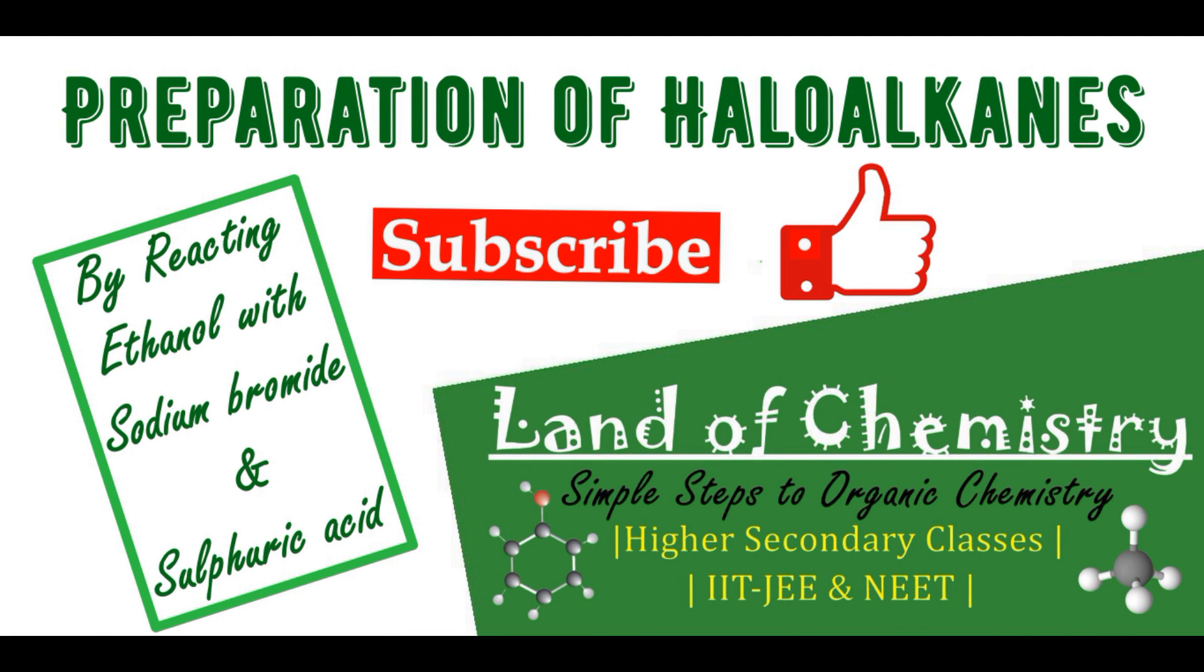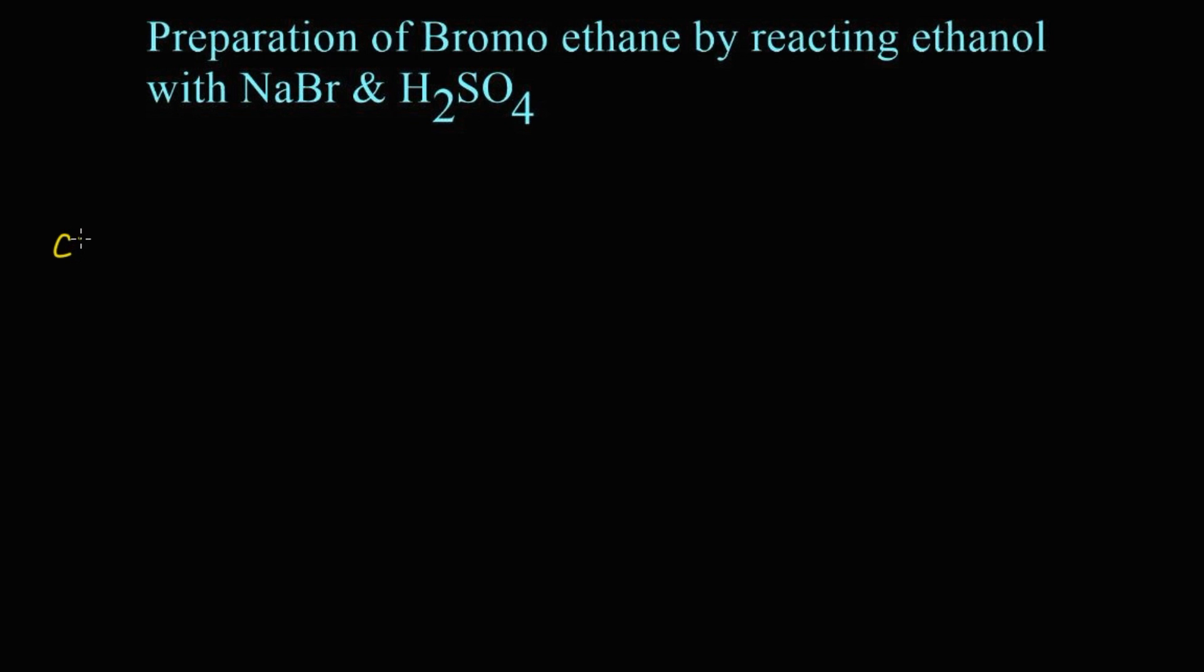Hi, welcome to Land of Chemistry. In this video, we are going to learn the preparation of haloalkanes by reacting ethanol with sodium bromide and sulfuric acid. Let's learn the reaction. Ethyl alcohol (CH3CH2OH) reacts with sodium bromide (NaBr) and sulfuric acid (H2SO4).